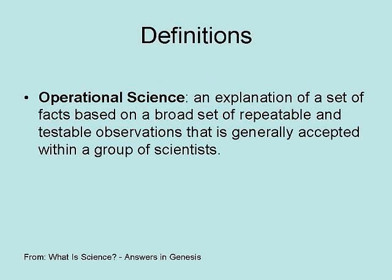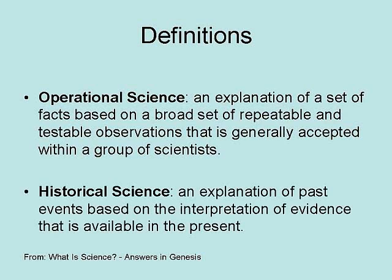Operational science is an explanation of a set of facts based on a broad set of repeatable and testable observations that is generally accepted within a group of scientists. Historical science is an explanation of past events based on the interpretation of evidence that is available in the present.